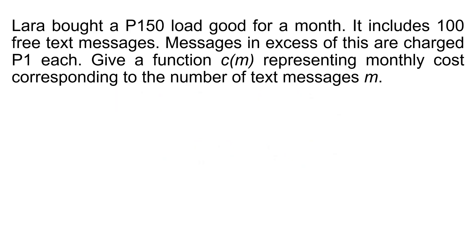For example, Lara bought a 150-peso load good for a month, which includes 100 free text messages. The two variables are: number of text messages m, the independent variable, and c of m, the monthly cost of Lara's load, the dependent variable. This situation involves two cases: sending messages not exceeding 100, and sending messages over 100.